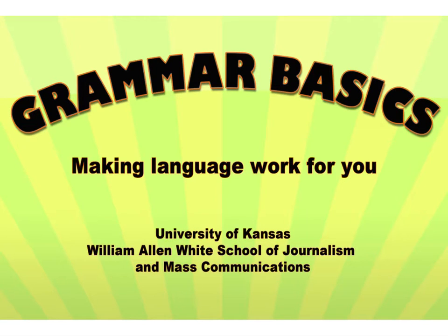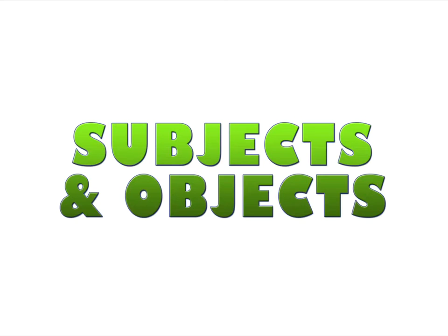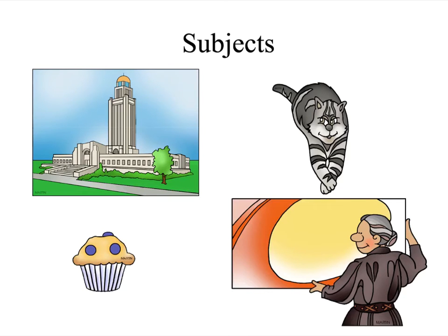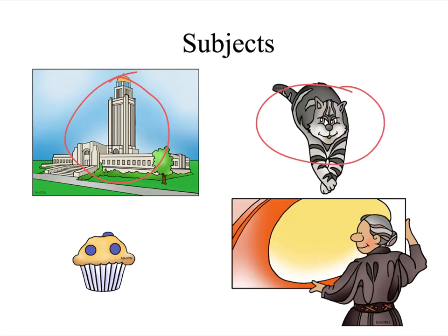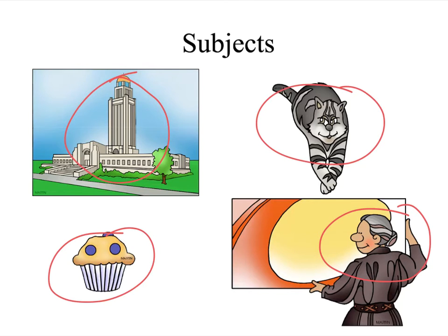This is Grammar Basics and I'm Lisa McClendon. Today we're going to talk about subjects and objects. Subjects are basically whatever is doing or being the verb. Like if you want to say 'the Nebraska capital is a tower,' 'the cat wants a belly rub,' 'blueberry muffins are good,' 'Georgia O'Keeffe painted the Southwest' — they're all doing or being something that has to do with a verb.